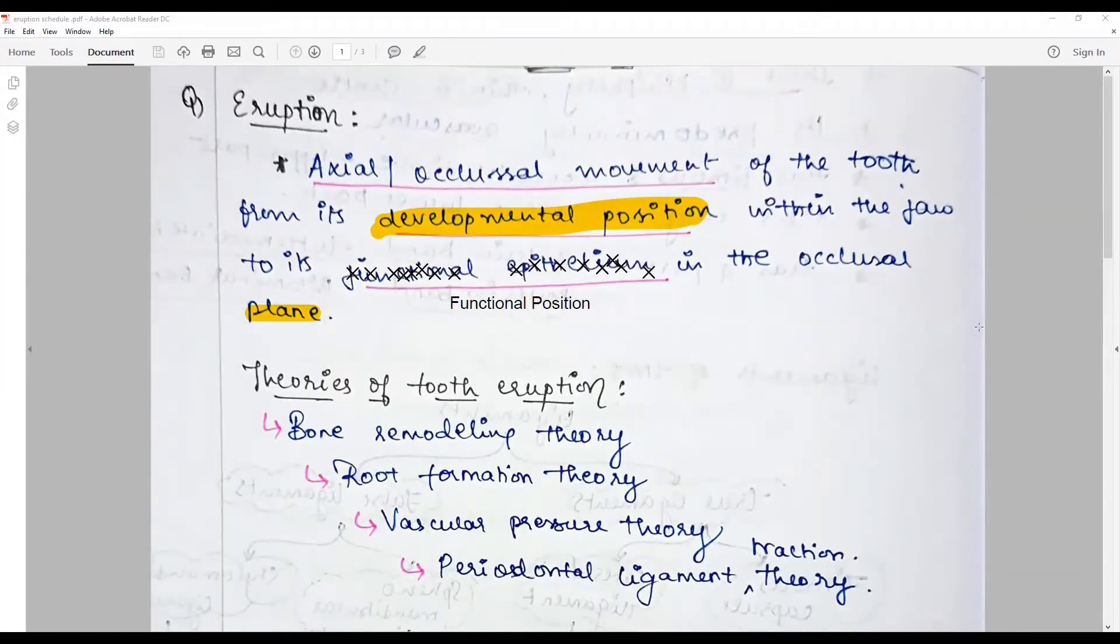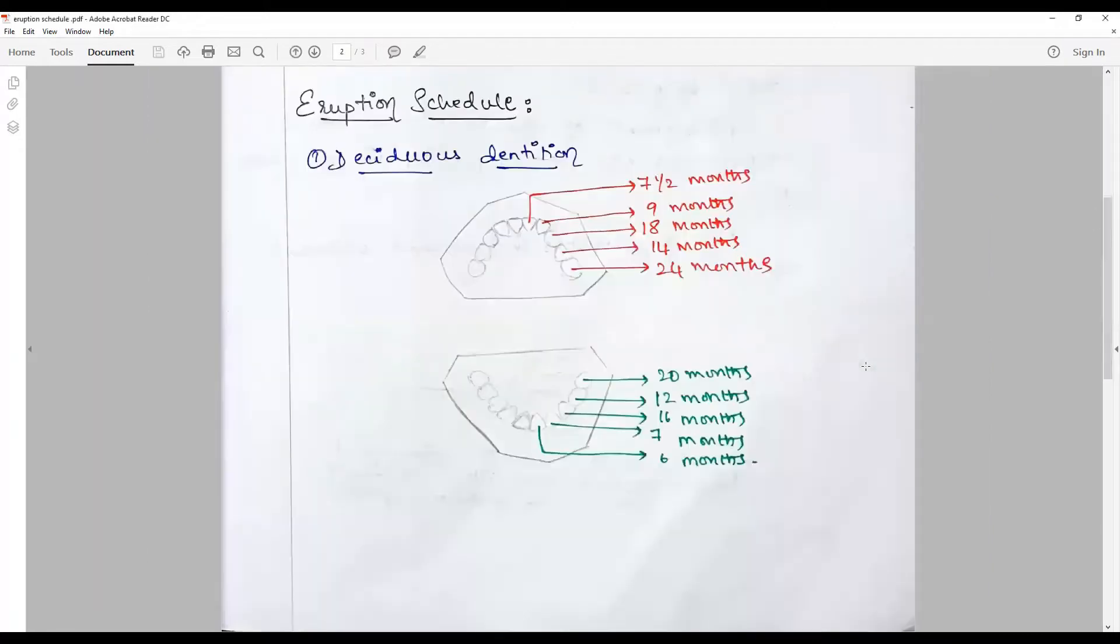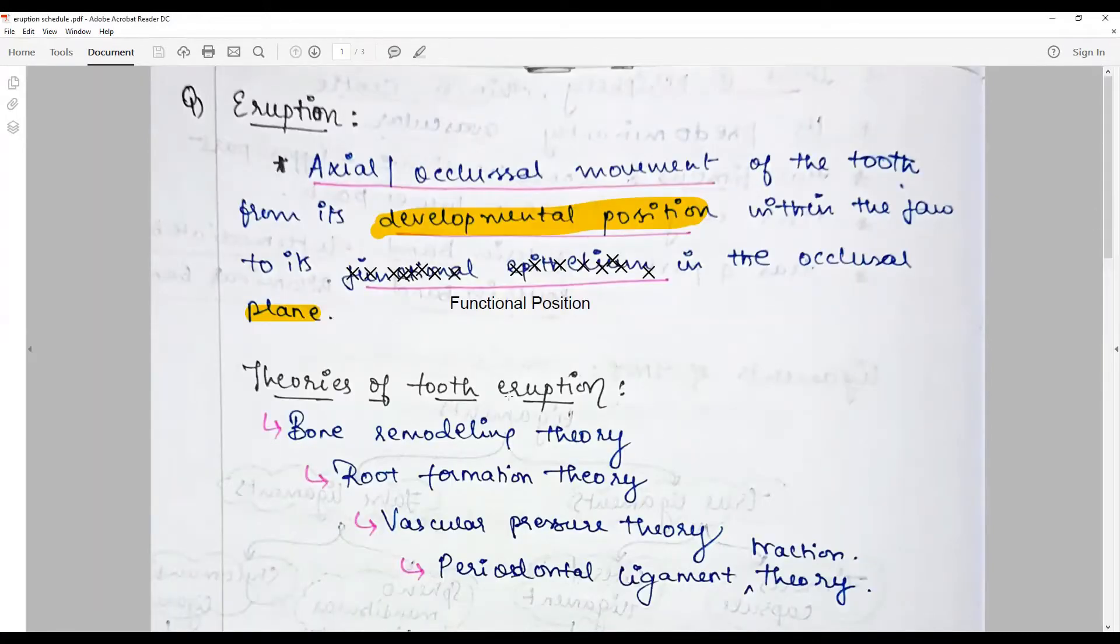There are four most discussed theories that explain tooth eruption. They are the bone remodeling theory, root formation theory, vascular pressure theory, and periodontal ligament traction theory.